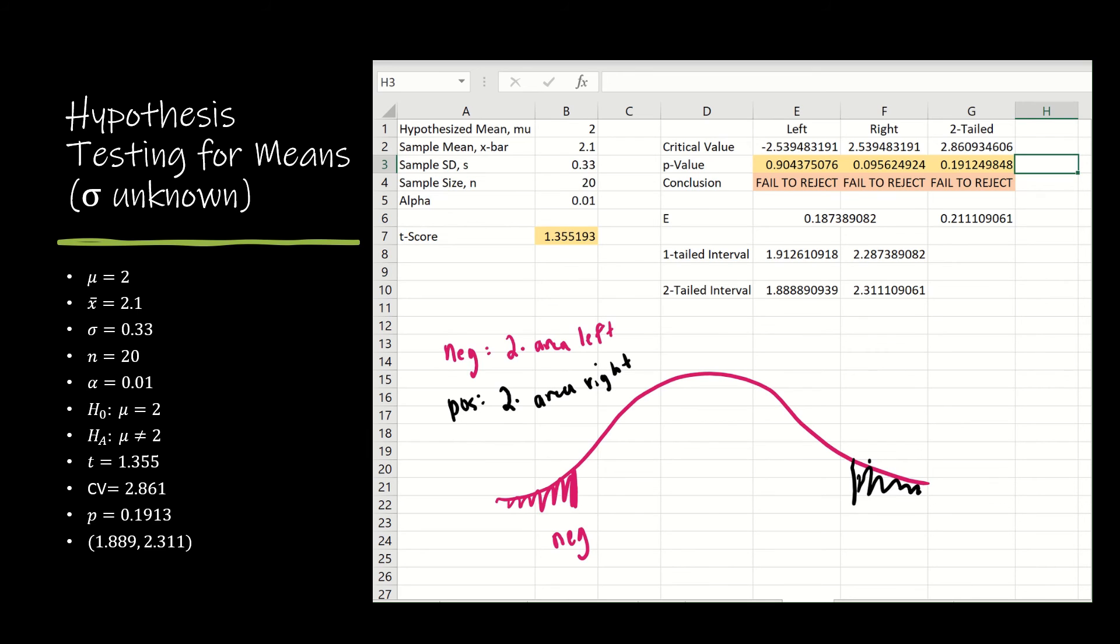Now, when I did this with a normal model, I said, I used an if then. If T score is negative, do this. If it's positive, do that. For this one, I chose to be a little more savvy and say, let's just do t dist right, two times t dist right.